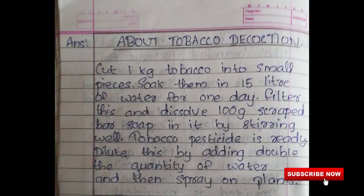About tobacco decoction: Cut 1 kg of tobacco into small pieces. Soak them in 15 liters of water for one day. Filter this and dissolve 100 grams of scrapped bar soap in it by stirring well. Tobacco pesticide is ready. Dilute this by adding double the quantity of water and then spray on plants.